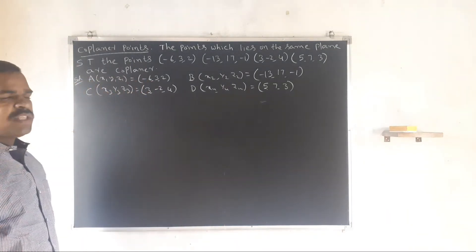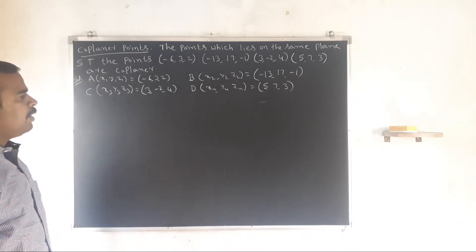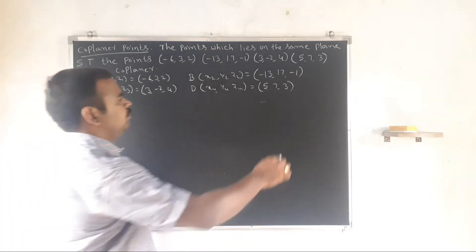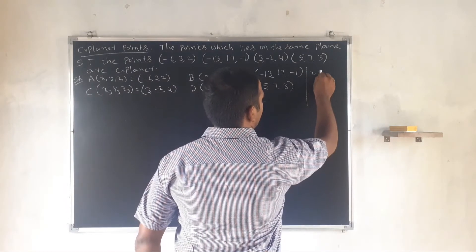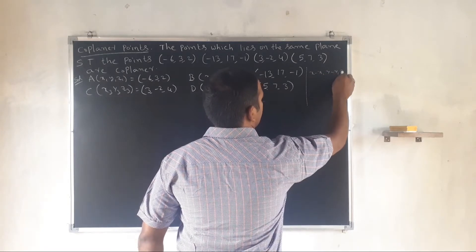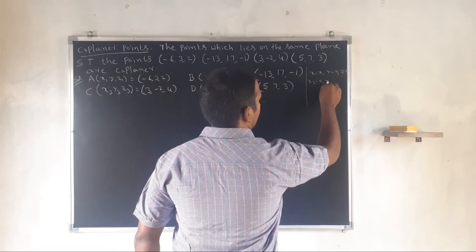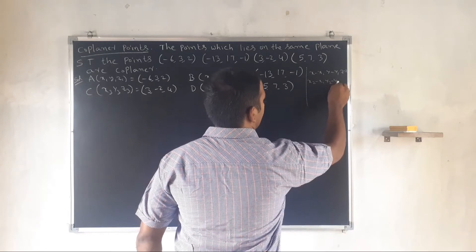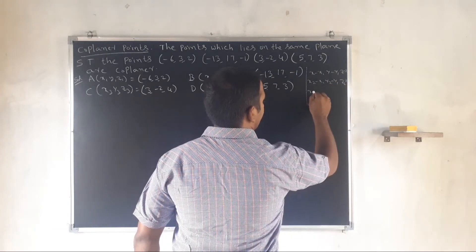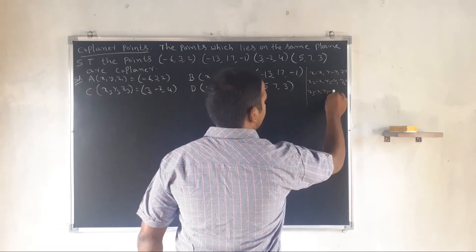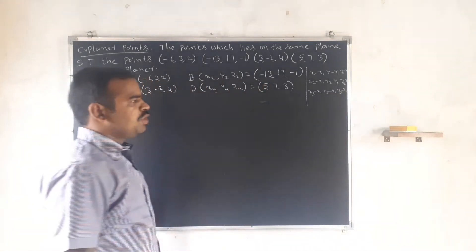We will find the plane equation through the three points A, B, C using the determinant formula: (x minus x1, y minus y1, z minus z1), (x2 minus x1, y2 minus y1, z2 minus z1), (x3 minus x1, y3 minus y1, z3 minus z1) equal to 0.